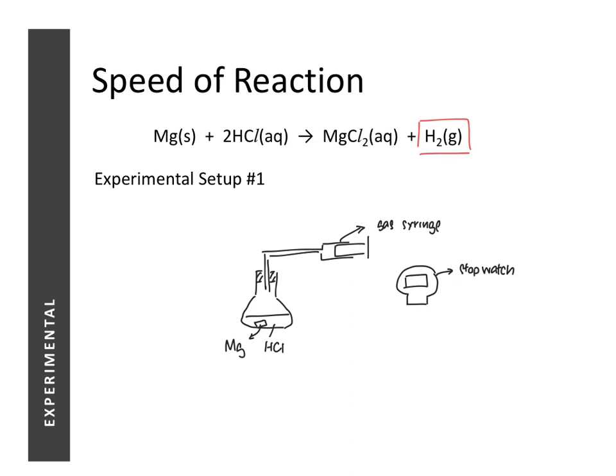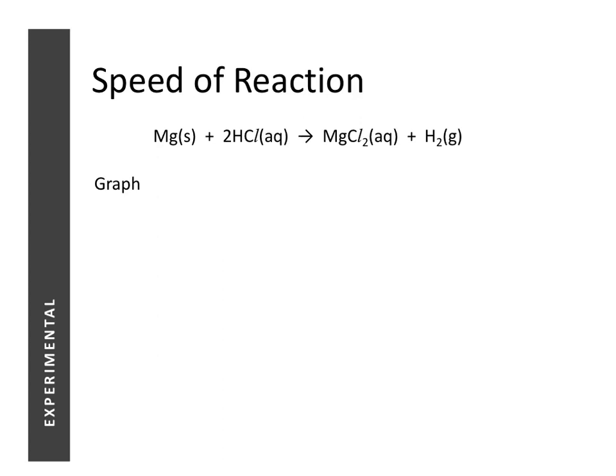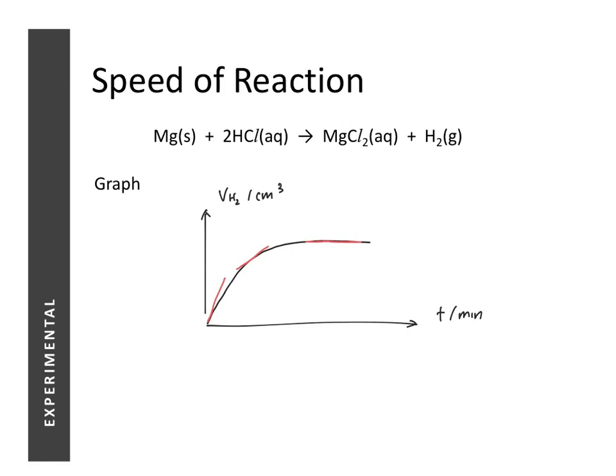With this experimental setup, we can measure the volume of gas produced over different time intervals and plot a graph of volume of gas versus time. When we plot this graph, it looks like this. Bearing in mind the definition of speed of reaction — the amount of product formed per unit time — the speed of reaction in graphical terms is represented by the gradient of the tangent at any point in time. At the very start of the reaction, the gradient is the steepest.